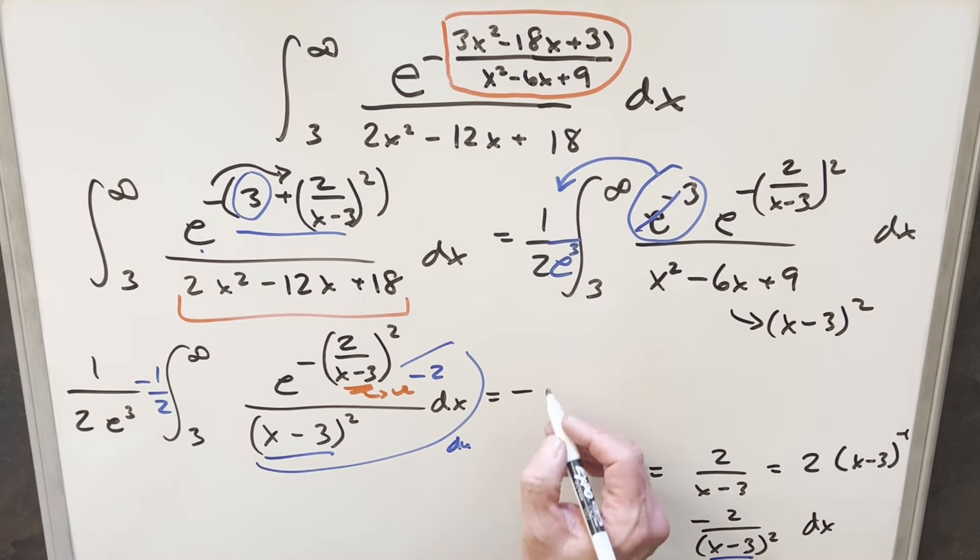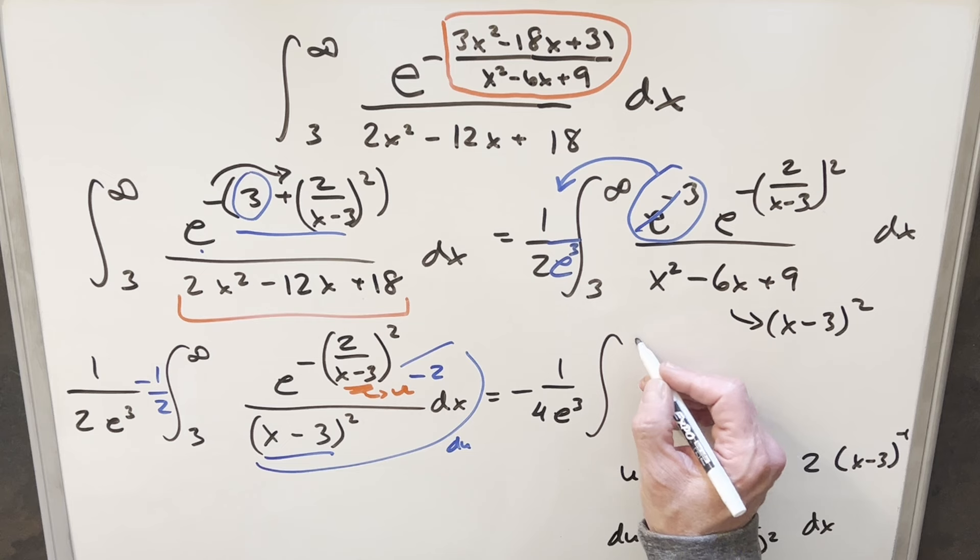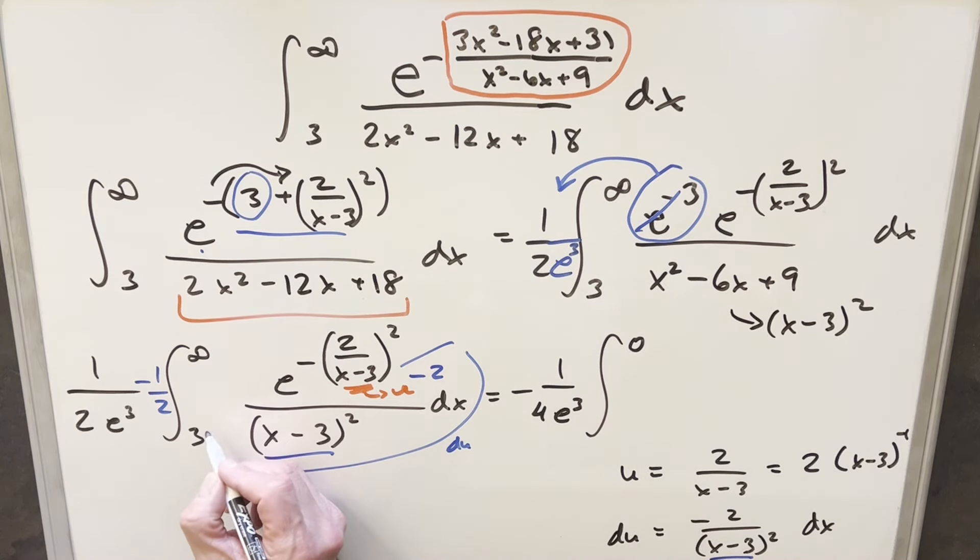First, what we have out front here, this is going to become minus one over two times two, four E cubed. Then we'll update our bounds. So first we'll plug in infinity here. We plug infinity in there, this thing's going to zero for the upper bound. Then next, when we plug a three in here, we need to look at this as three plus, this is like the right side of three.